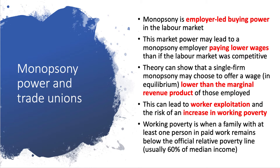In theory, a single-firm monopsony — a profit-maximising employer — may choose to offer a wage in equilibrium which is lower than the value of the marginal revenue product of those people employed. If you're paying a worker less than the value they create, that can lead to worker exploitation and working poverty, which is when a family with at least one person in paid work is stuck below the official relative poverty line, usually 60% of median income.